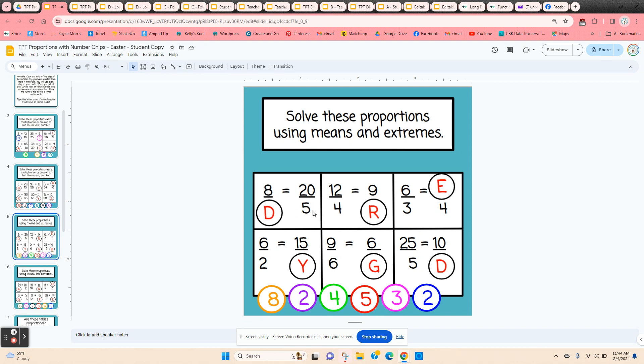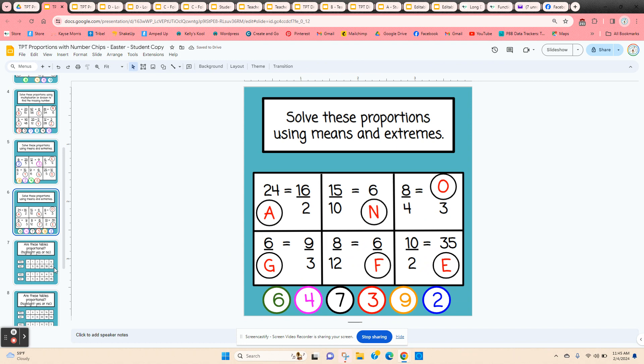Eight times five is 40. That means 20 times what number is also 40, so that would be a two. Four times nine is 36, so 12 times three would also be 36. And so on. Then they've got a few more on the next slide.